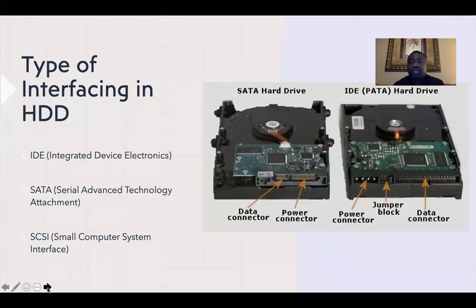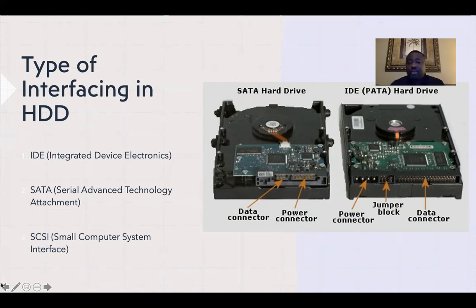Now the interfaces of a hard drive — we're going to look at three of them. We have the Integrated Device Electronics, SATA (Serial Advanced Technology Attachment), and the Small Computer System Interface, which is SCSI. You can see models of two of them to your right, where the power connector and data connector are connected to the drive, and those will be their connections to the computer motherboard.